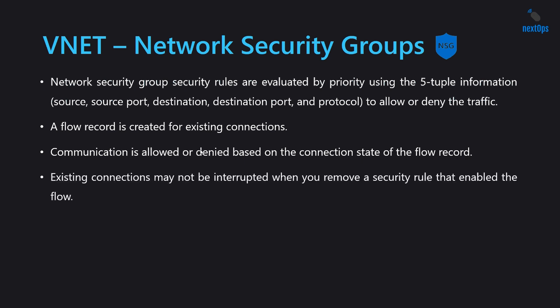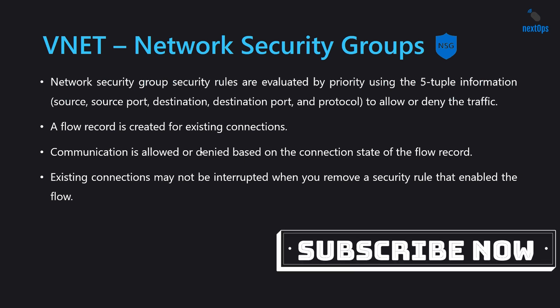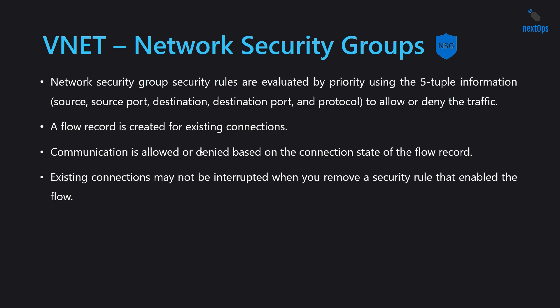Existing connections may not be interrupted when you remove a security rule that enables the flow. For example, if you have a virtual machine and you have opened an RDP connection to it, and someone from your team updates the NSG rule that controls this RDP access and changes it to deny while you are using it — that does not close your existing connection. Existing connections will not be interrupted if someone updates the security rule affecting access to your resource.